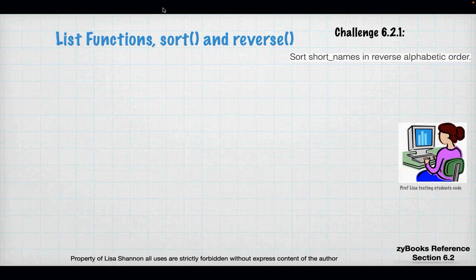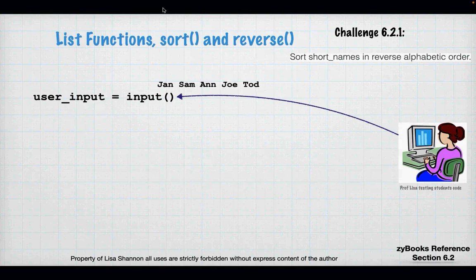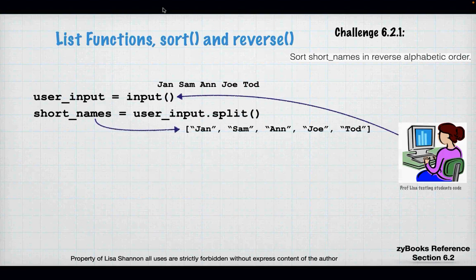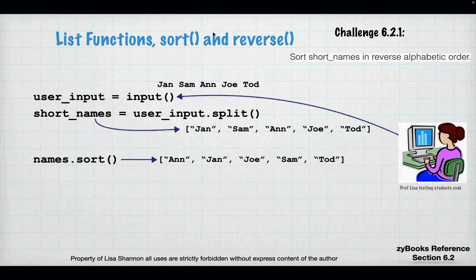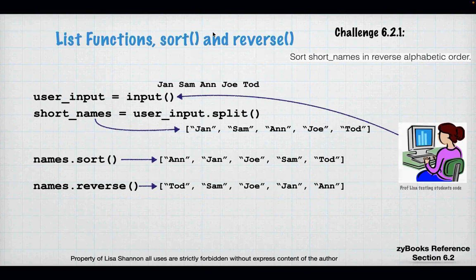So, sort and reverse. We're going to sort short_names in reverse alphabetical order. I'm going to input Jan, Sam, Ann, Joe, and Todd as a non-comma-delimited string, so there are no commas - split will just split on a space. We want to first sort it in alphabetical order using names.sort, and then reverse sort it. For sort to work properly, you need elements of the same type. Python gives you these functions so you don't have to worry about doing them on your own.